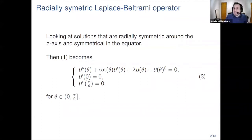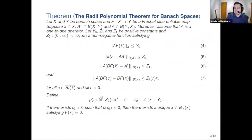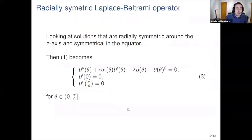My goal was to prove that there exists a solution. I will use a theorem that everybody here has probably seen in some form: the Radii Polynomial Theorem for Banach spaces. To apply that theorem, I need to define a Banach space — specifically the space of infinite sequences where the elements are the coefficients of some series expansion of the solution. I also need to define a Fréchet differentiable map as a zero-finding problem whose solution gives the coefficients of the solution for the Laplace-Beltrami equation.